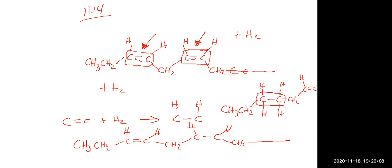So because it says one equivalent, you're just adding one H2. If you wanted to take out both of these at once you would need two H2s — one would take out the first double bond, and the second one would take out the second one and make it a single bond. The completely hydrogenated one would be if you added enough H2s to take away all the double bonds.